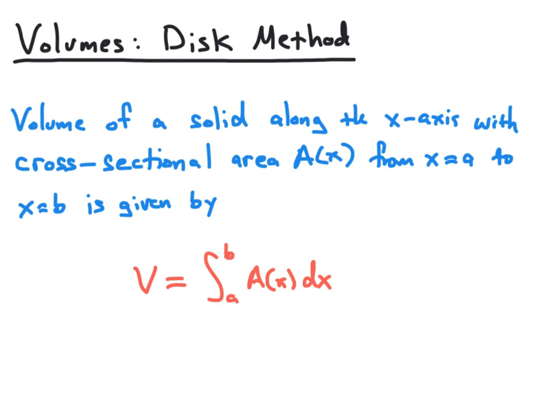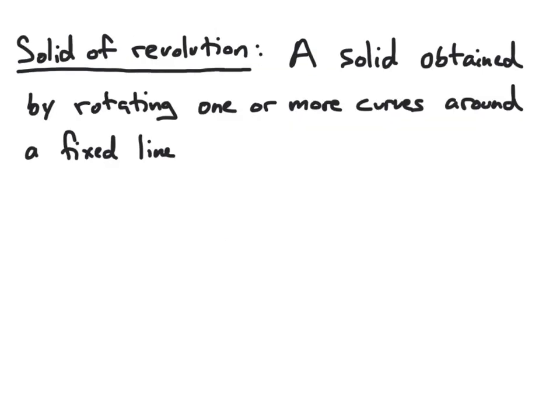But in this video, we're going to specifically look at solids of revolution whose cross-sections are disks. When we use the phrase solid of revolution, we're referring to a solid obtained in a very specific way — a solid that we obtain by rotating one or more curves in the plane around a fixed line.